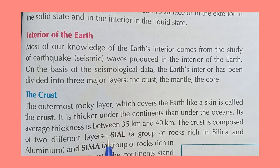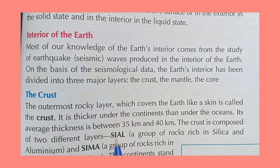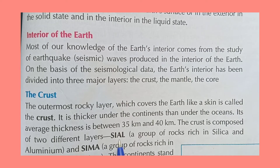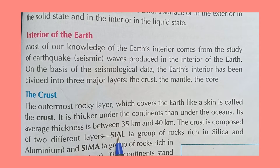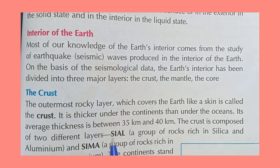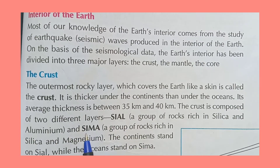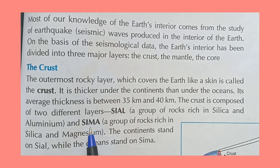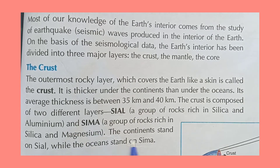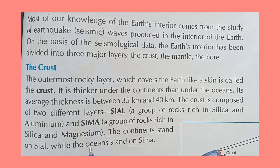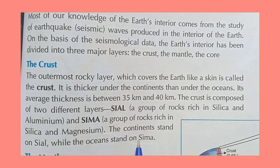The crust is composed of two different layers. The first is Siyaar — a group of rocks rich in silica and aluminium (Si + Al), where Si means silica and Al means aluminium. The second is Sima — rocks rich in silica and magnesium (Si + Ma). The continents stand on Siyaar, that is silica and aluminium, while the oceans stand on Sima, that is silica and magnesium.